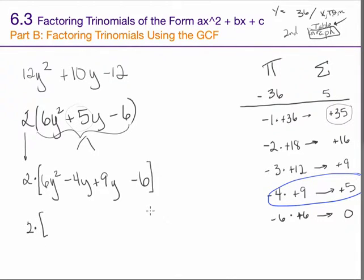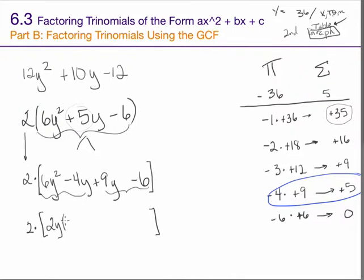I still have to write down the whole problem, even the part I'm not actively working with. This is the trinomial I'm factoring now, with its middle term split up. These are the first two terms and these are the last two terms, from which I need to find a greatest common factor. What's common to both 6y squared and negative 4y? That would be 2y, and what's left over is 3y minus 2, because 2y times 3y is 6y squared and 2y times negative 2 is negative 4y. What's common to both 9y and negative 6? That would be 3, and what's left over is 3y minus 2.